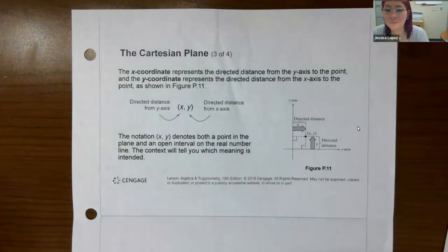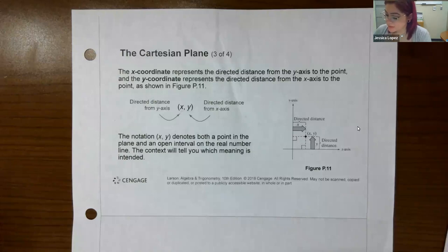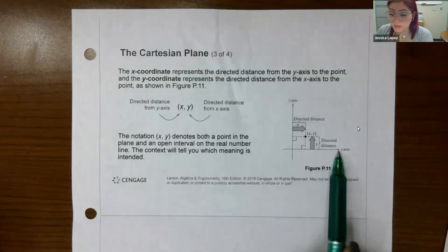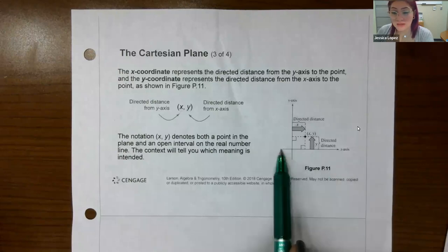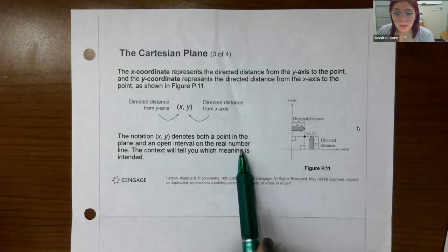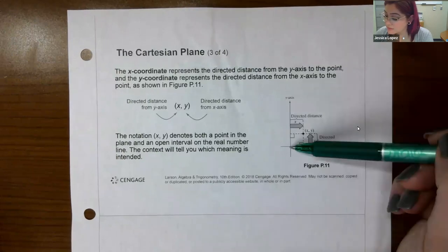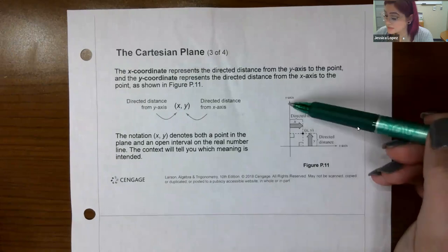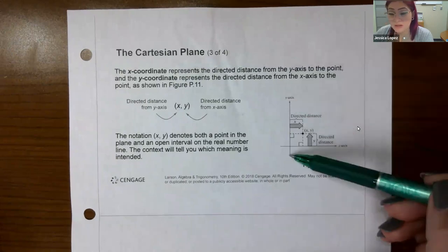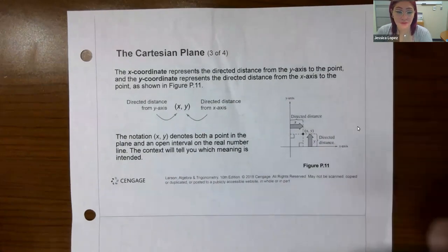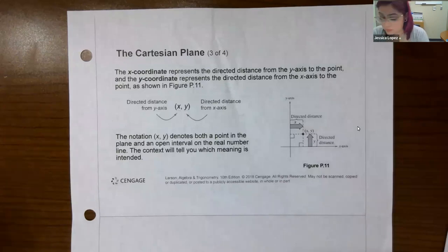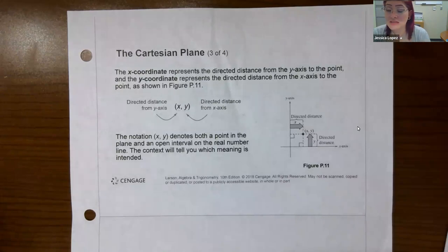The x coordinate represents the directed distance from the y-axis to a certain place. If it's positive, it's directed in the positive x-axis direction. If the x coordinate is negative, it's directed in the negative x-axis direction. For the y coordinate, same thing: if it's positive, it will be moving toward the positive y-axis. And if the y coordinate is negative, it's moving in the negative y-axis direction. What is in the x coordinate spot tells you how many units it goes, and whether it's positive or negative tells you which direction it moves.